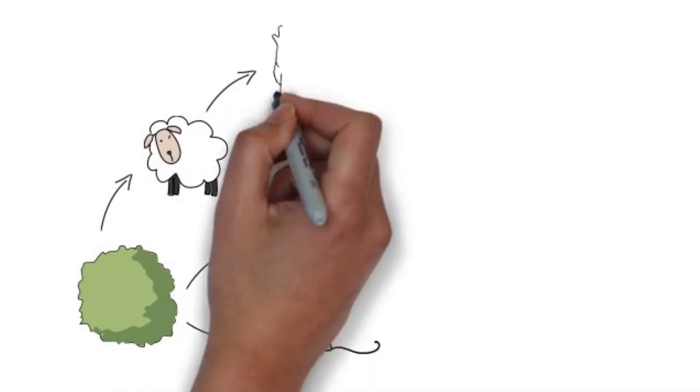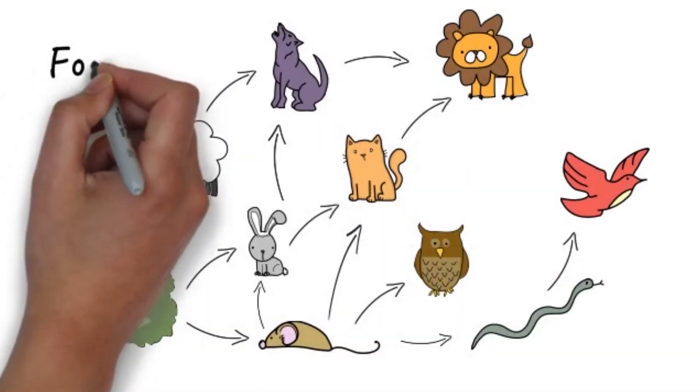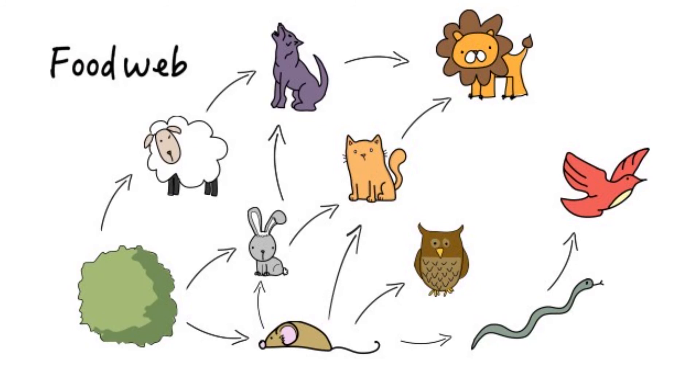Several food chains combined are called a food web, so energy flows from one living being to another, following a web scheme.